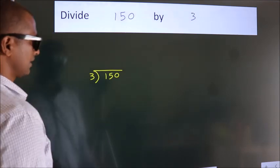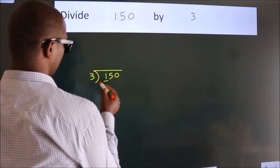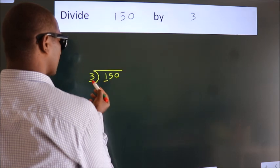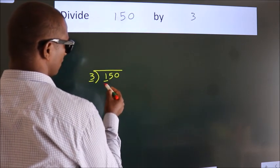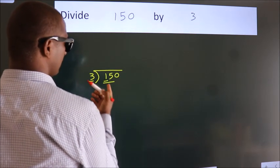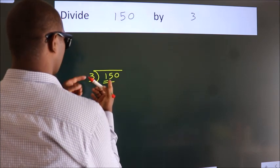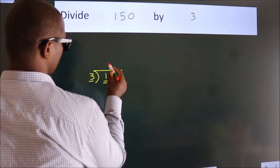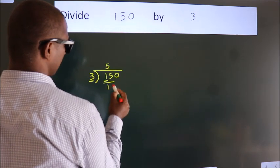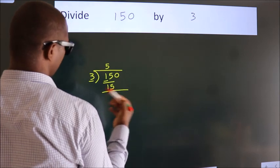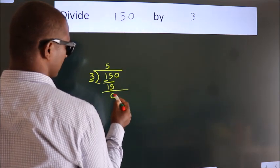Next, here we have 1, here 3. 1 smaller than 3, so we should take 2 numbers, 15. When do we get 15? In 3 table. 3 fives, 15. Now, we should subtract. We get 0.